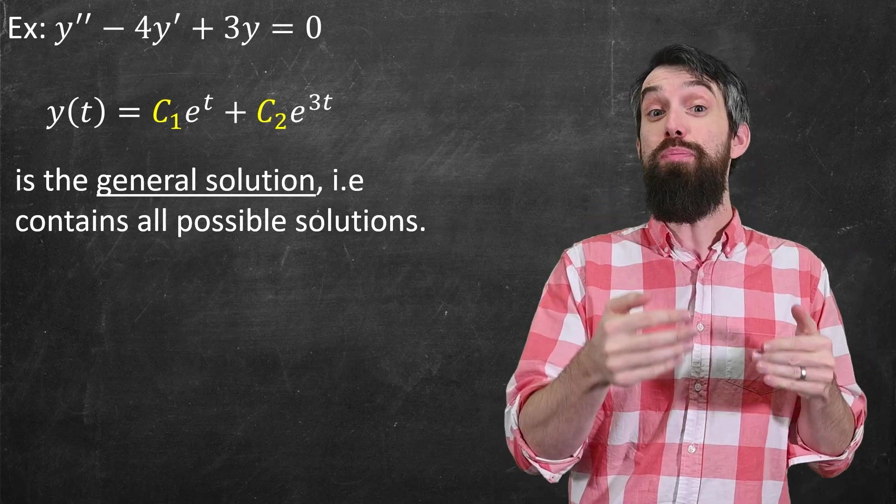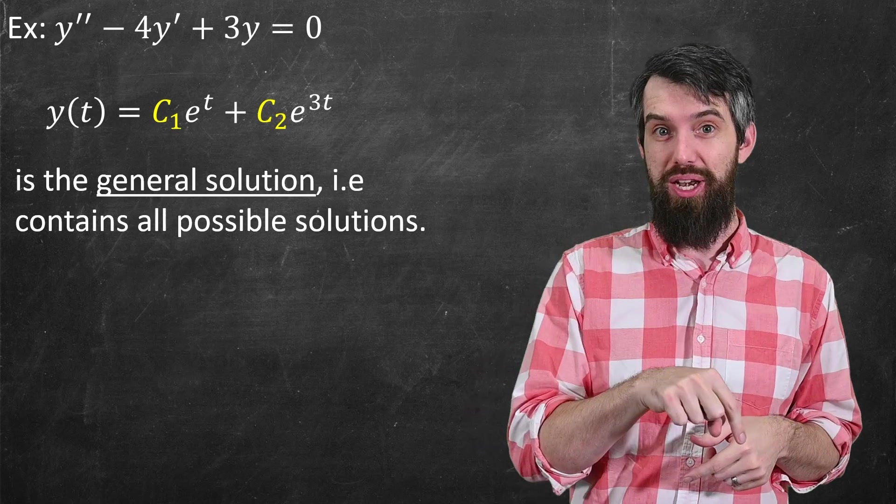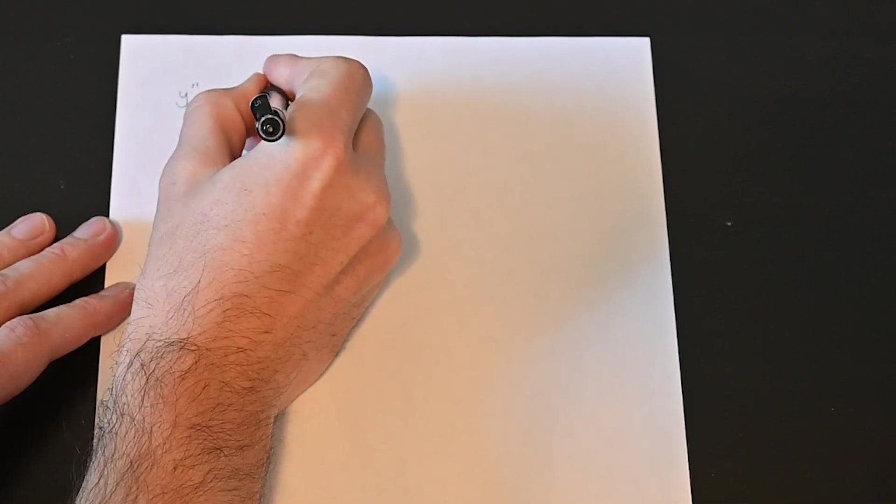What I can do with Maple Calculator, which is an app that you can install on your phone, and the links are down in the description, is I can just handwrite out the differential equation that I'm trying to study. So I can handwrite out y double prime minus 4y prime plus 3y equal to 0.